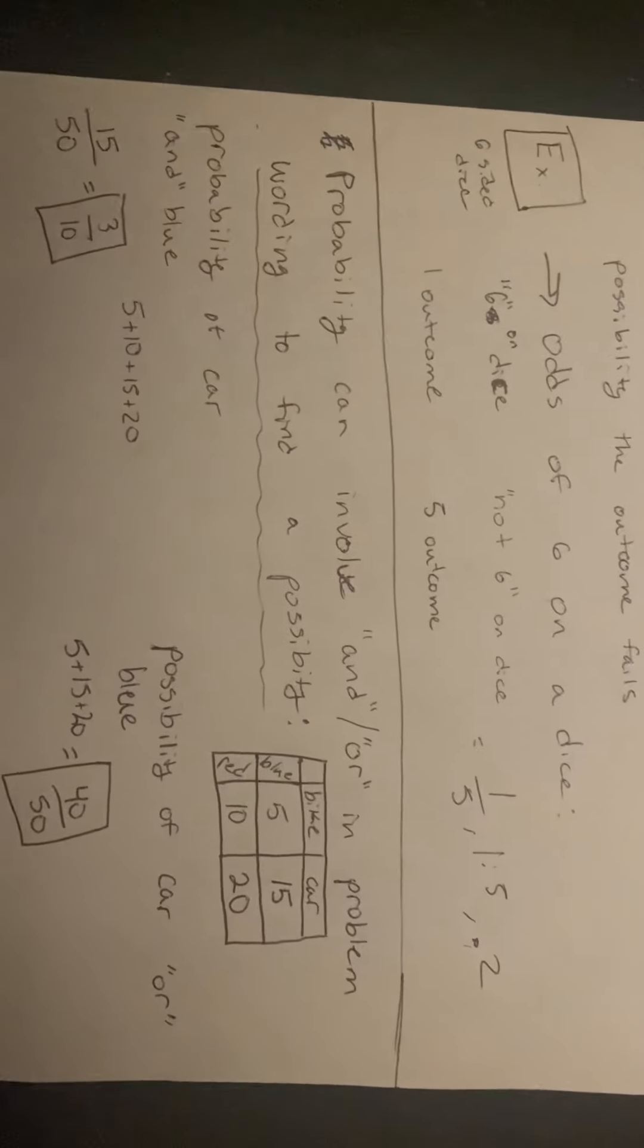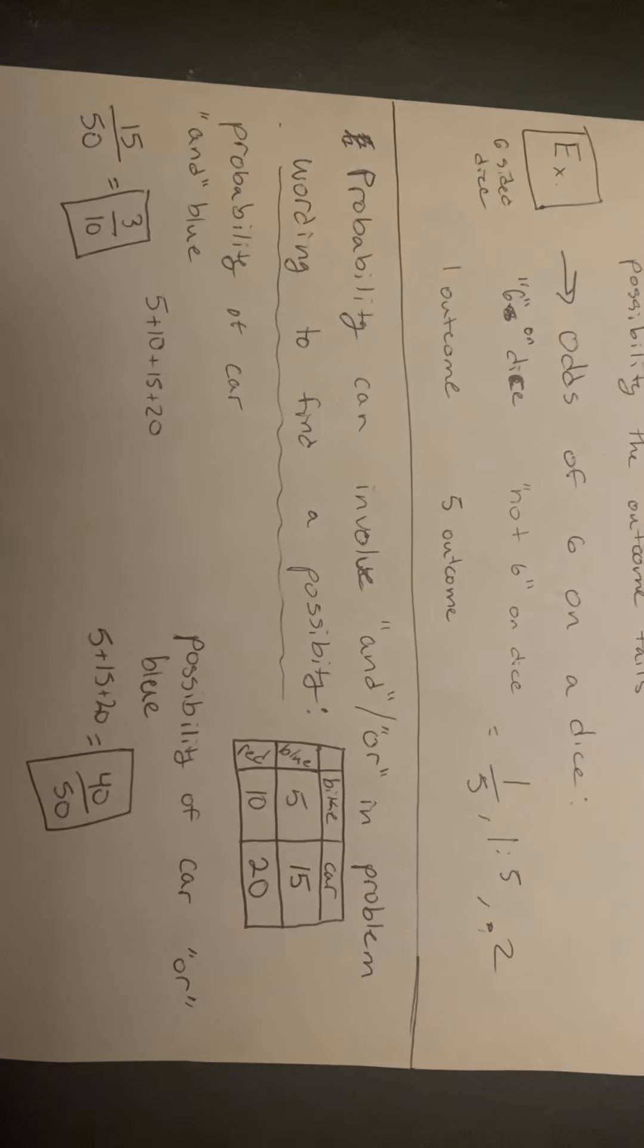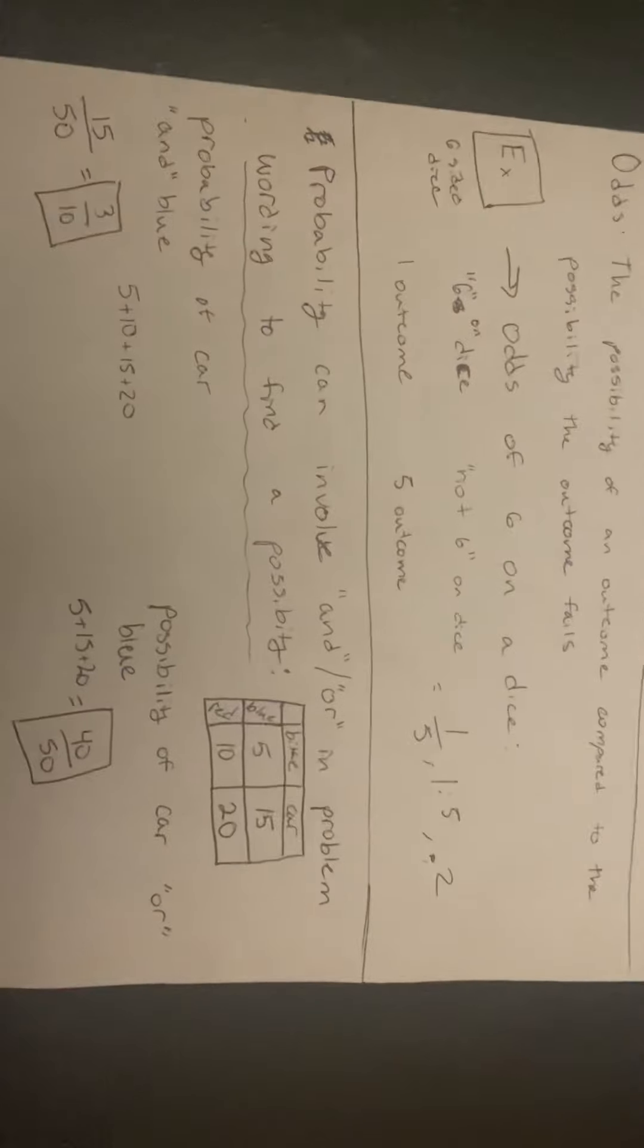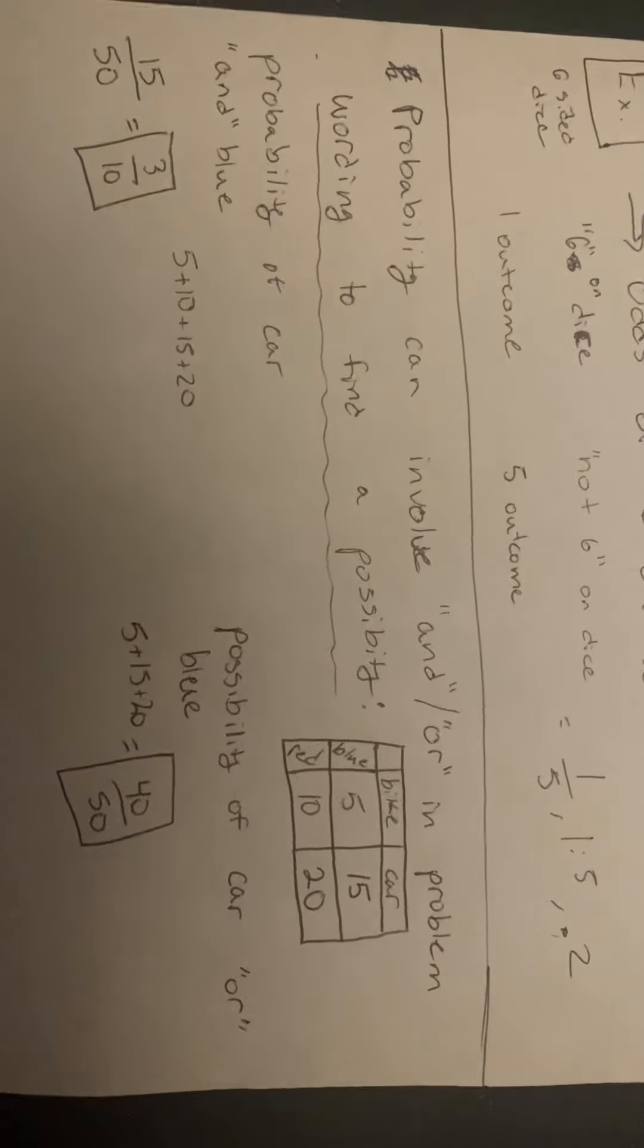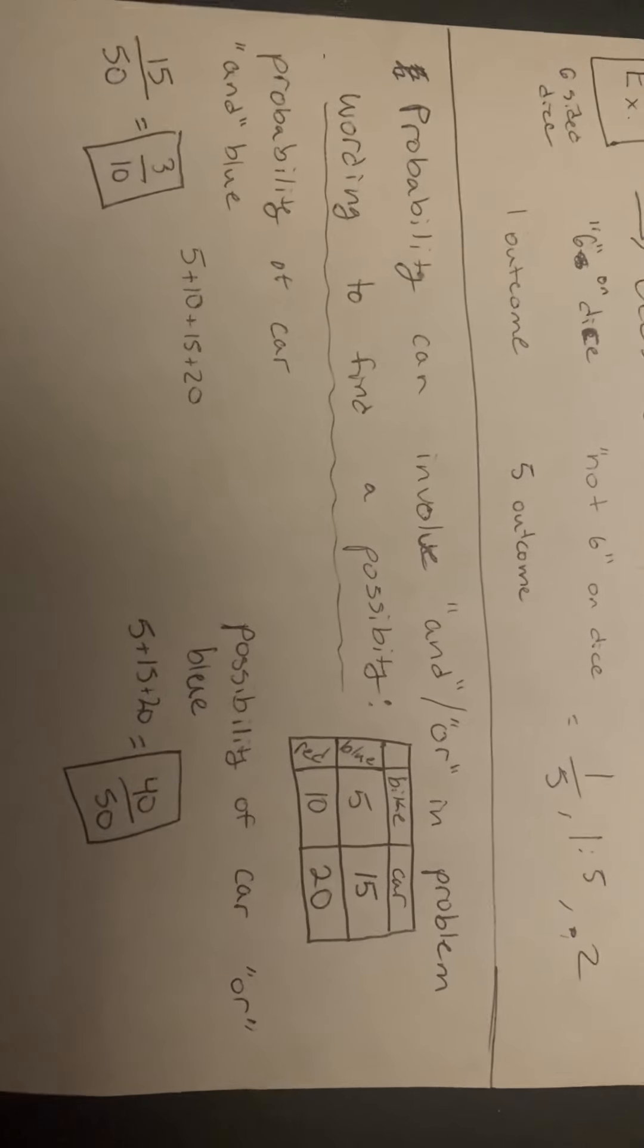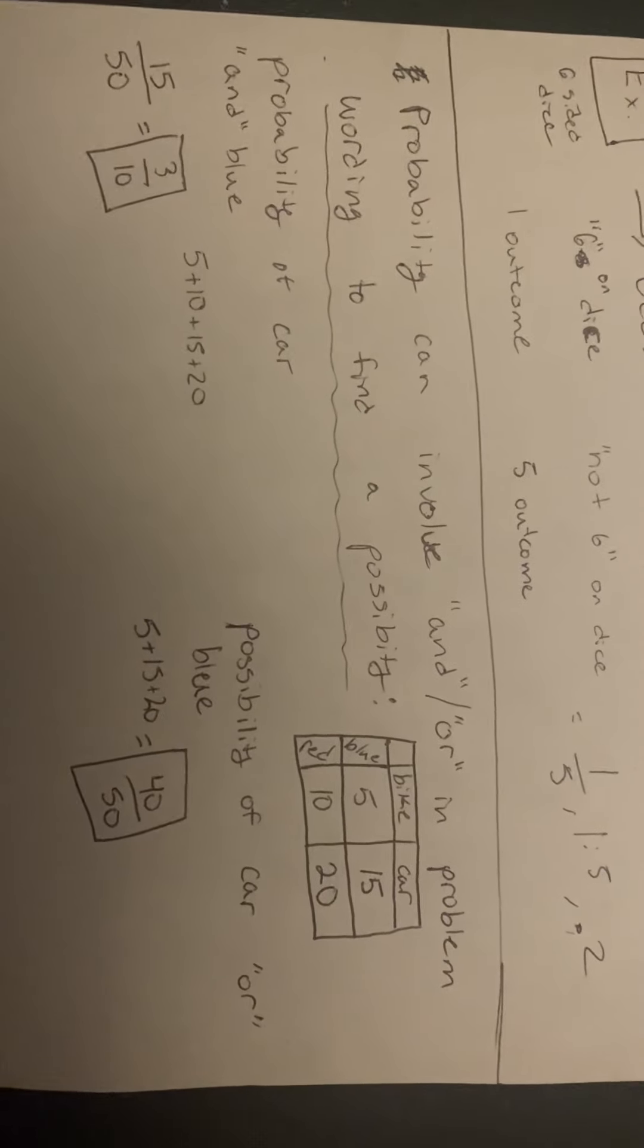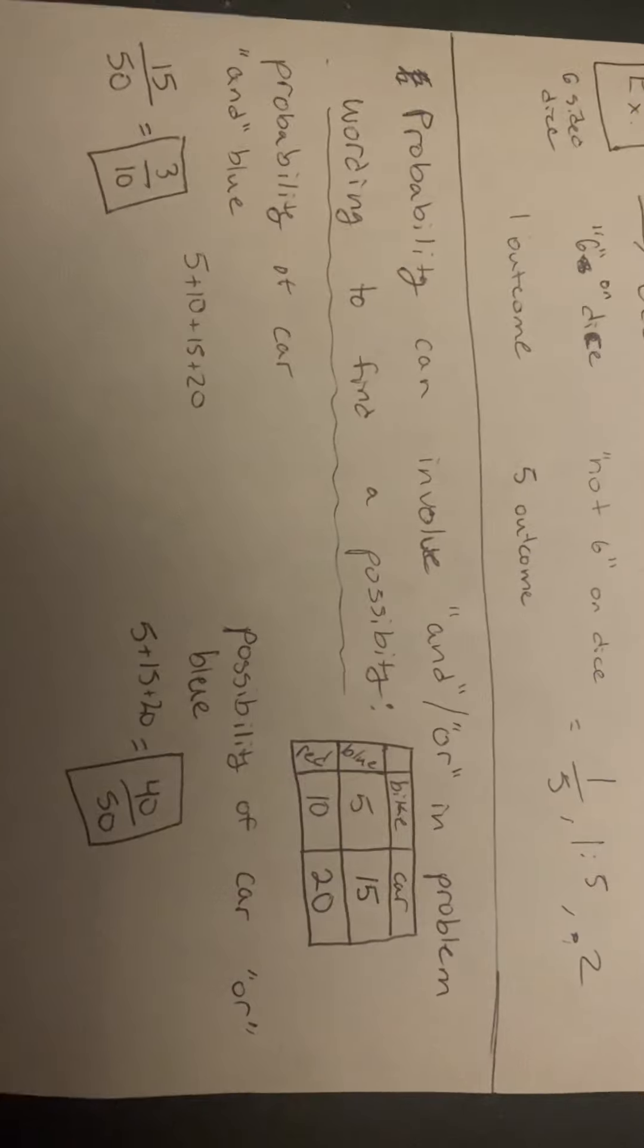Probability can involve 'and' or 'or' in the problem wording. Here we have a data table labeled with red and blue for the categories of color, and the vehicles in the table are a bike and a car.